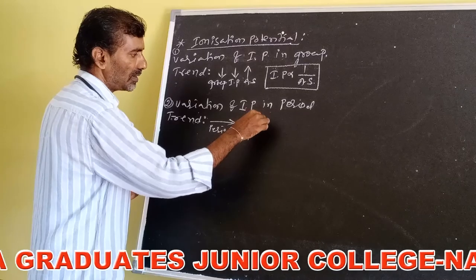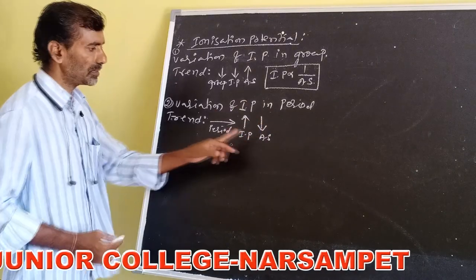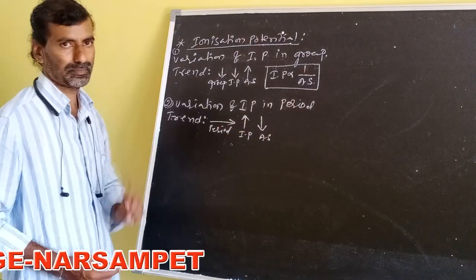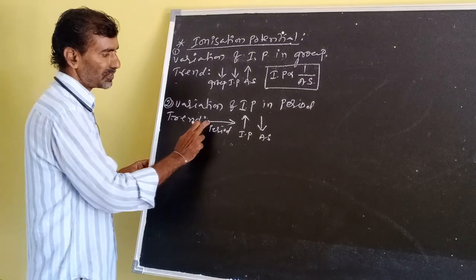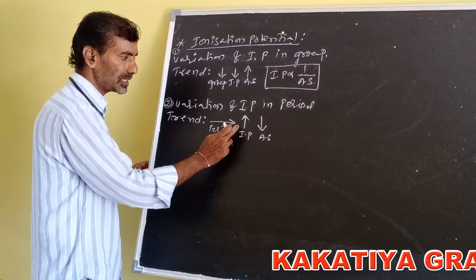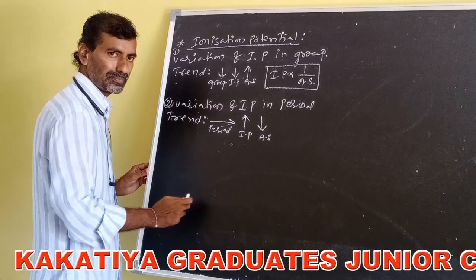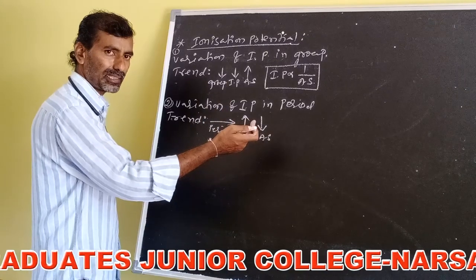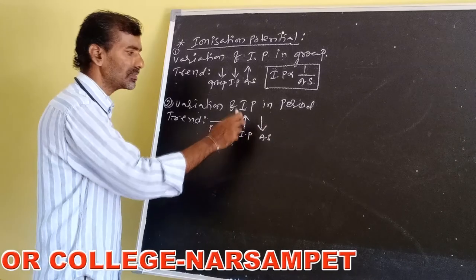Reason: atomic size decreases across the period. As atomic size decreases, the nuclear force of attraction on valence electrons increases. Hence, IP values increase.